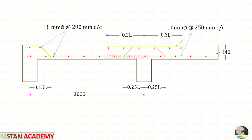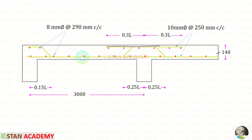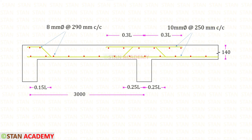Here you can see the reinforcement details. For the distribution bars, we have provided 8 mm diameter bars at 290 mm spacing. For both the positive and negative moment zones, we have provided 10 mm diameter bars at 250 mm spacing. This concludes the session. Thank you for watching.